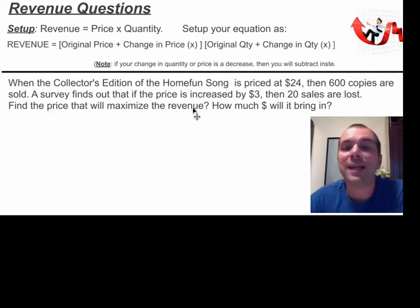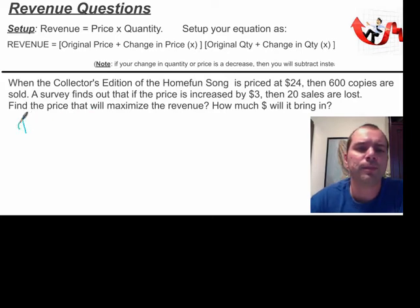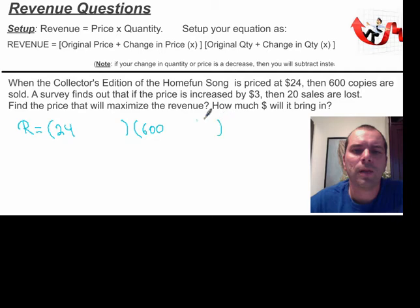Find the price that will maximize the revenue. How much money will it bring in? So let's follow this. So it says my revenue is equal to my original price, which was $24, and then 600. That's my revenue right now, $24 times 600, whatever that turns out to be.